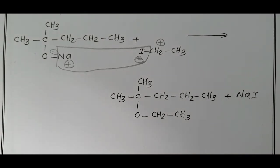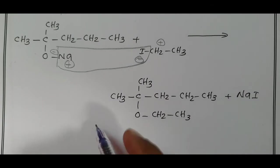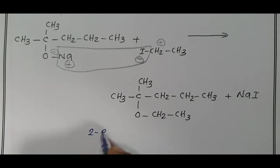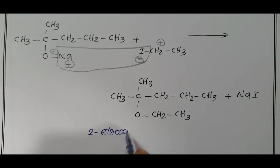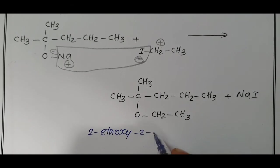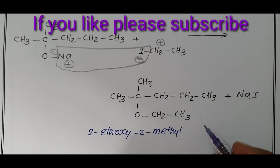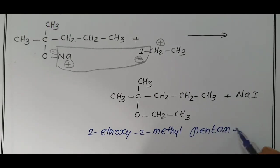This is our product, in the second carbon we have 1-ethoxy, 2-ethoxy and in the same second carbon we have methyl, 2-ethoxy, 2-methyl, how many carbon atoms? 5-carbon, carbon, carbon, single bond, pentane, 2-ethoxy, 2-methyl-pentane.